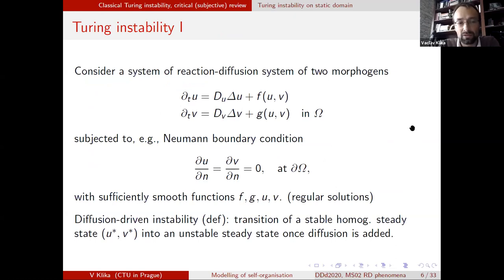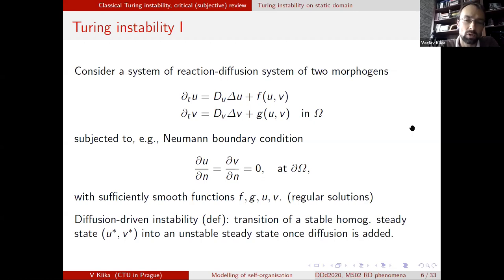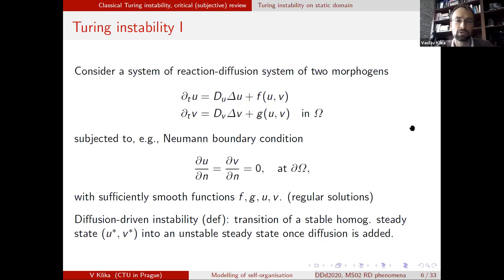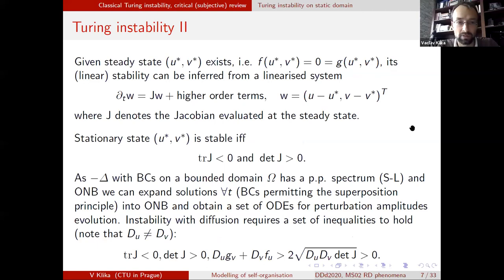What we mean by diffusion-driven instability is a transition of a stable homogeneous steady state into an unstable state once diffusion is added. I'll come back to why we should be interested in this transition — having a stable homogeneous steady state when diffusion is off, and then observing the emergence of a pattern once we switch diffusion on.